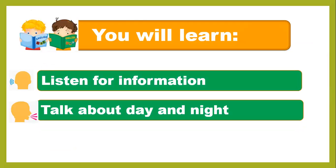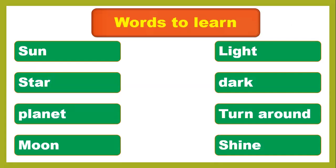In this lesson you are going to learn what you can see in the sky by day and night. First, you have to listen for information about day and night, and then talk about day and night. The important words for this lesson are: sun, star, planet, moon, light, dark, turn around, and shine. You have to learn and memorize these words and try to write them in your notebooks.